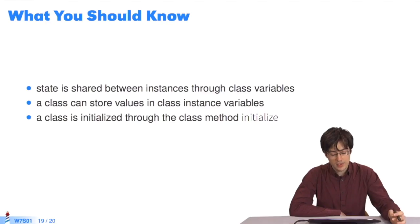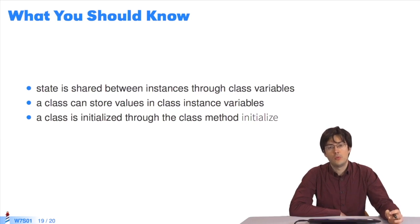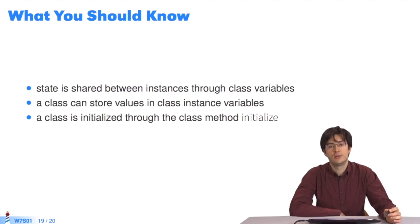Here are the takeaways. We use class variables to share a state. Classes are objects that can have their own variables, so we use instance variables on the class side. To initialize a class, we send it an initialize message and apply the initialize method on the class side.